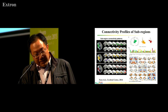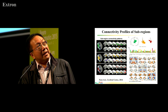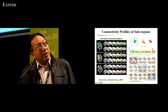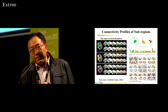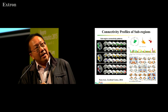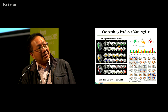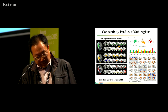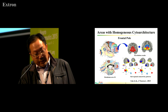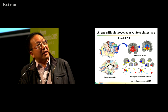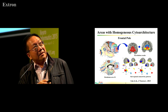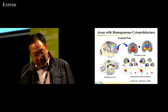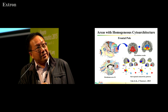Another very important thing is that the Brainnetome ATLAS is based on the connectivity profile. Besides that, we can provide fine topography. We can also provide the connectivity information, for example, anatomical connectivity or functional connectivity. Another example is the frontal pole, which also has homogenous cytoarchitecture. So far we cannot parcellate it based on cytoarchitecture, but we can parcellate it into three different parts.